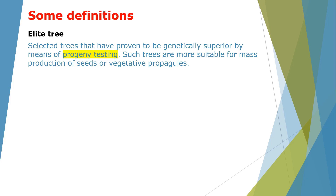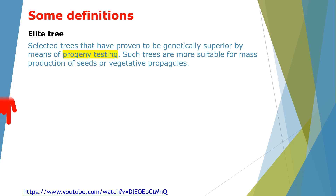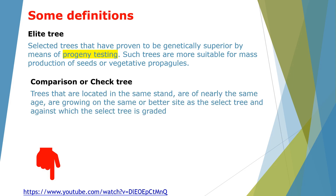Sometimes you also have an elite tree in the stand you're working in. Elite trees are trees that have been proven to be genetically superior by means of progeny testing. Such trees have been proven more suitable for mass production, seed production, or vegetated propagules. However, you don't always have elite trees in every stand — but if you have them, that's much better. I've provided a link for more information about elite trees and the other tree types discussed.